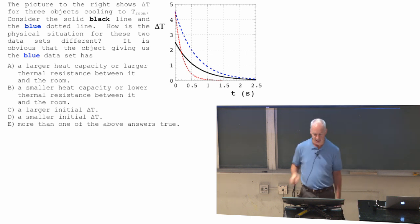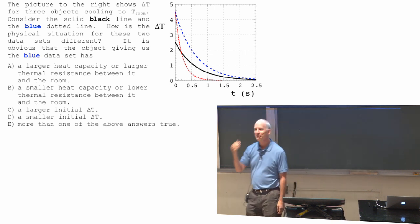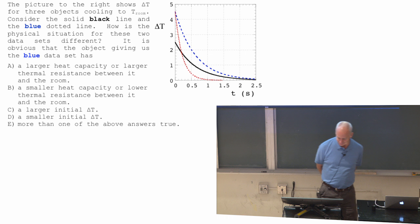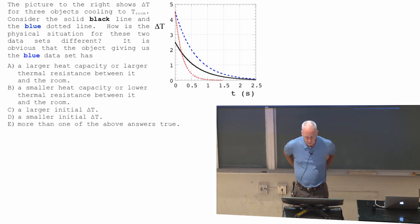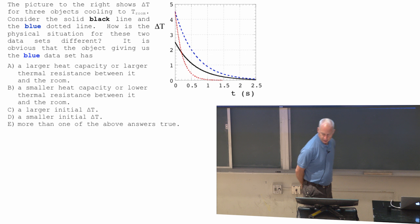So, I'm gonna ask you three questions. They're all about exponentials. You've taken math, so you know all about exponentials. The picture to the right shows delta T for three different objects cooling off to room temperature. So that's the situation. It's just like this water cooling off to room temperature. It's doing it fairly quickly, so these objects must be fairly tiny. But anyway, how is the physical situation for these two data sets different? This is a question about the blue line and the black line. Forget about the red line for a second.